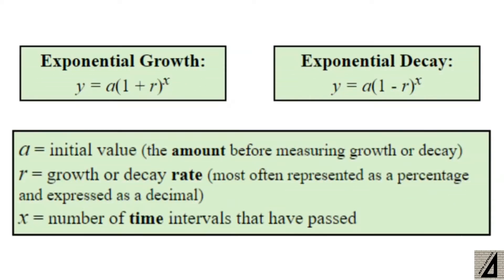Here is the exponential growth and the exponential decay. And here are the parameters, where a is the initial value, the amount before measuring growth or decay, r is the growth or decay rate, and x is the number of time intervals that have passed.